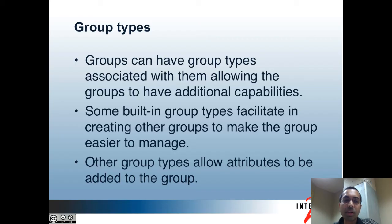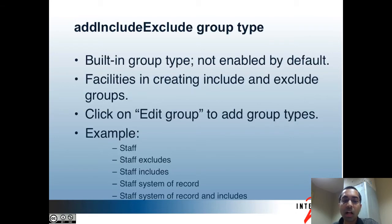The next topic is group types. Groups can have group types associated with them, allowing the groups to have additional capabilities. Some built-in group types facilitate creating other groups to make the group easier to manage, and other group types allow attributes to be added to the groups. I'll cover one example: the add-include-exclude group type. This is a built-in group type, but it's not enabled by default, so you may not necessarily see it.